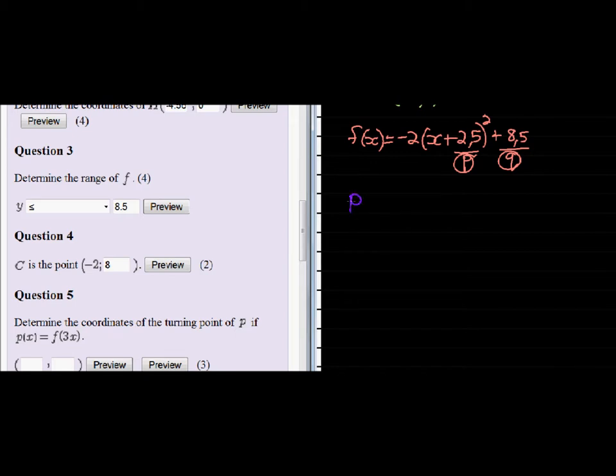So that's the new one P(x) is equal to negative 2 and instead of X we put a 3X plus 2.5 plus 8.5. Well, let's have a look.